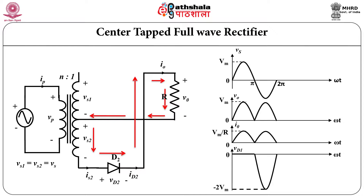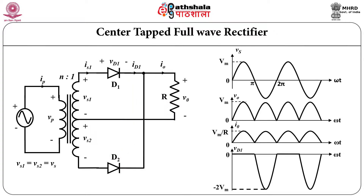It is clear that the DC output voltage is increased. But it is also observed that during turn-off condition, the diode is highly reverse biased. That voltage is minus 2 Vm.